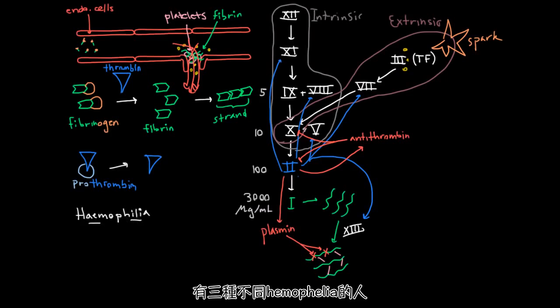And there are three different kinds of hemophilia. There is A, there's B, and there's C. And it's easy to remember the causes of these because A is associated with 8, B is associated with what comes after 8, 9, and C is associated with what comes after 9, not 10 actually, but 11.